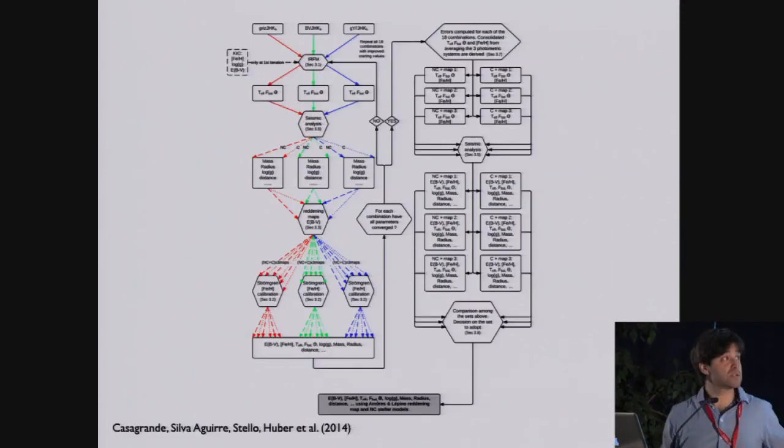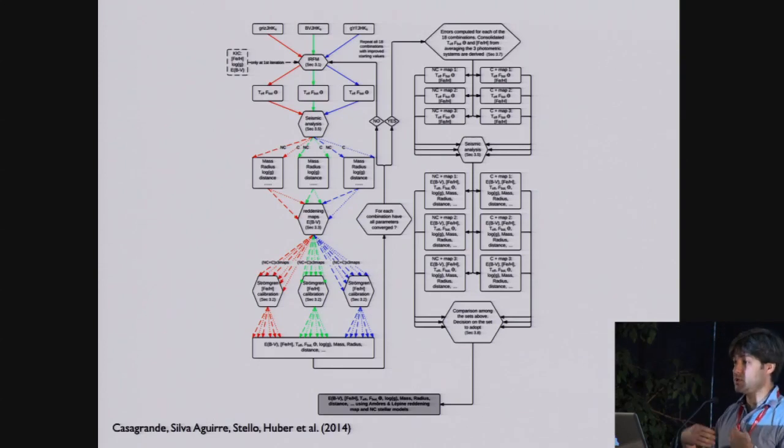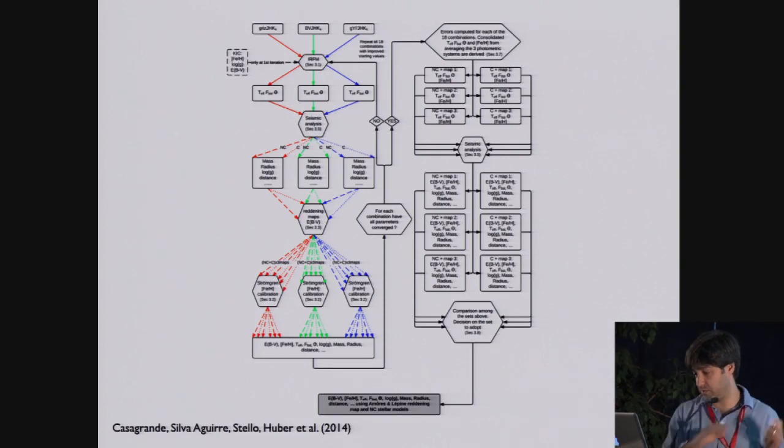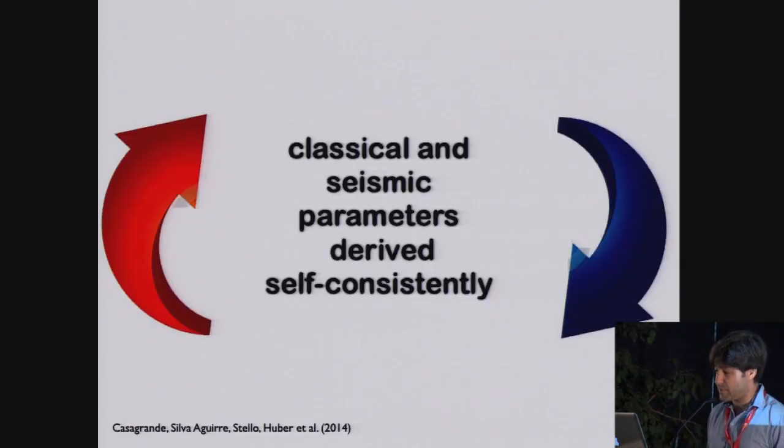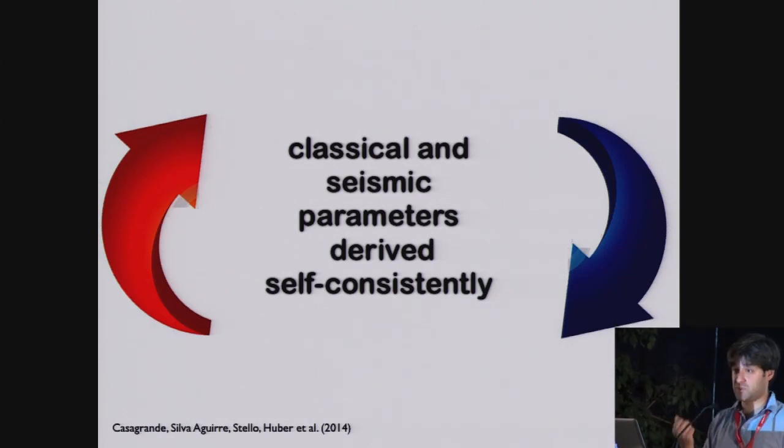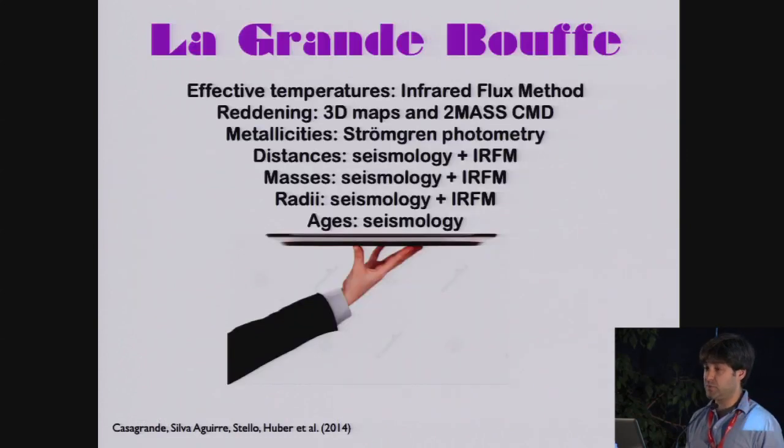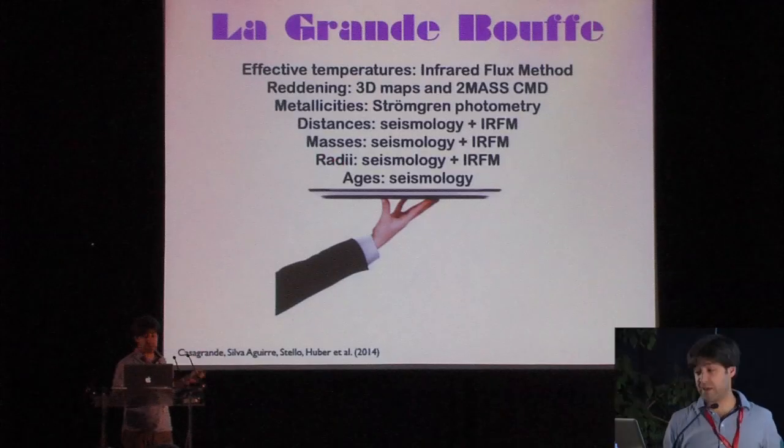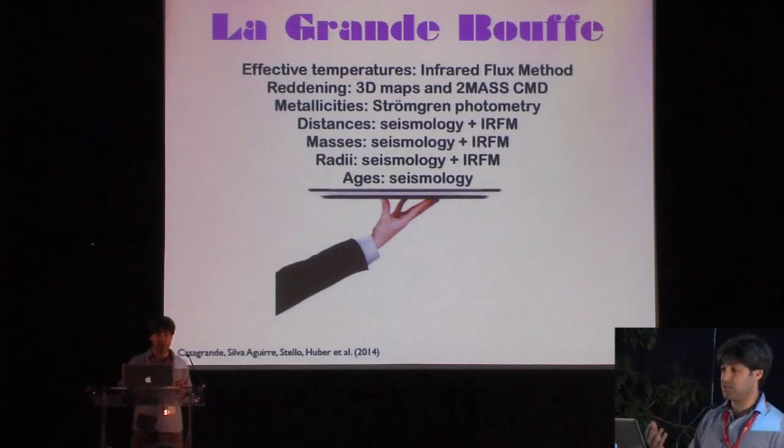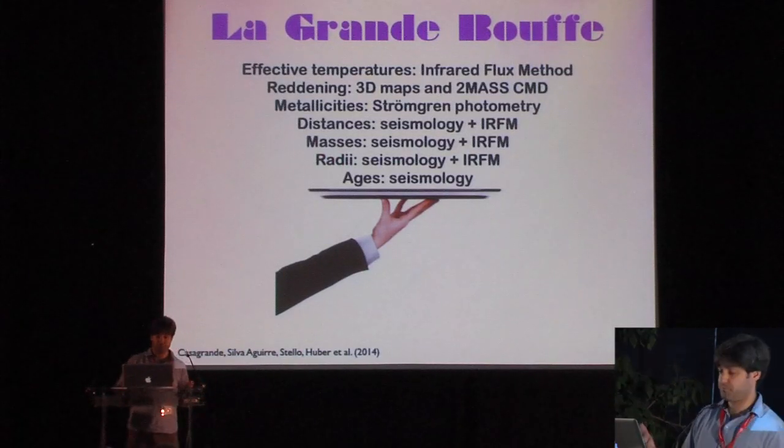So here is just all the procedure that we use to derive classical and seismic parameters. I don't expect you to go through this. If you're interested, please have a look at the detailed paper. But the point here is that essentially we derive the classical and the seismic parameters self-consistently. And so the parameters that we derive are the ages from seismology, then the radii, the masses, the distances, the metallicities. I didn't really touch upon reddening and effective temperature.